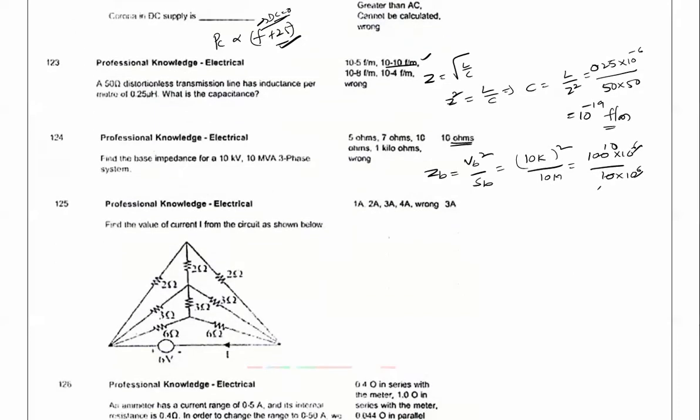Next question is based on balancing of bridges. Here 2 into 3 is 6, 3 into 2 is 6, so no current flow. This 2 ohms resistor, so 3 into 6 is 18. Here also no current flows. If you draw the equivalent circuit of this network, plus or minus 6 volts here. Here I have resistance of 6 ohms, 6 ohms connected in series. Here I have 3 and 3, and here I have 2 and 2.